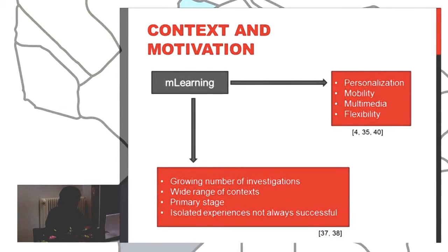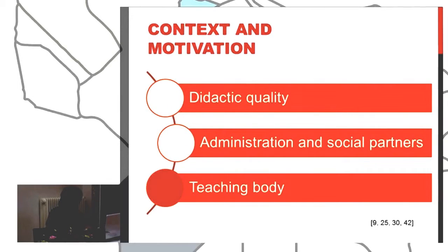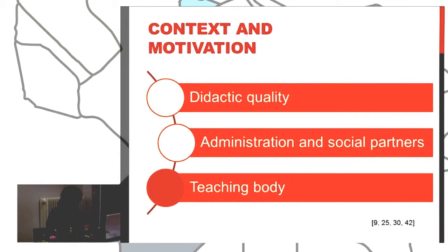Although the investigations from an educational point of view are still in the primary stage of development, and there are often isolated experiences with no continuation and not always successful. There are three main pillars when it comes to mobile learning integration success: the improvement of the adaptive quality of the design, the involvement of the administration and social patterns, and the collaboration of the teaching body.